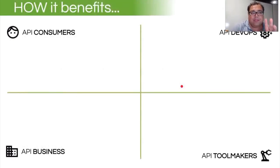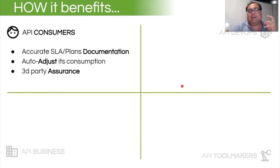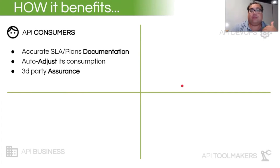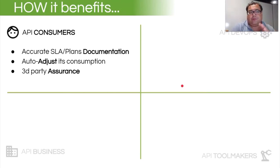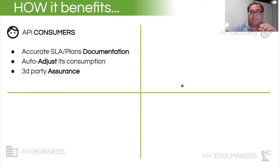Let's see how this kind of API spec could benefit different stakeholders. From the perspective of API consumers, this spec could boost an ecosystem of tools to improve accurate SLA plan documentation. It could also allow tools to adjust consumption — for example, the throttling mentioned earlier — and it could open the opportunity for third-party assurance organizations to monitor or analyze APIs to ensure a specific service level. We will see a glimpse of that in one of the demos.